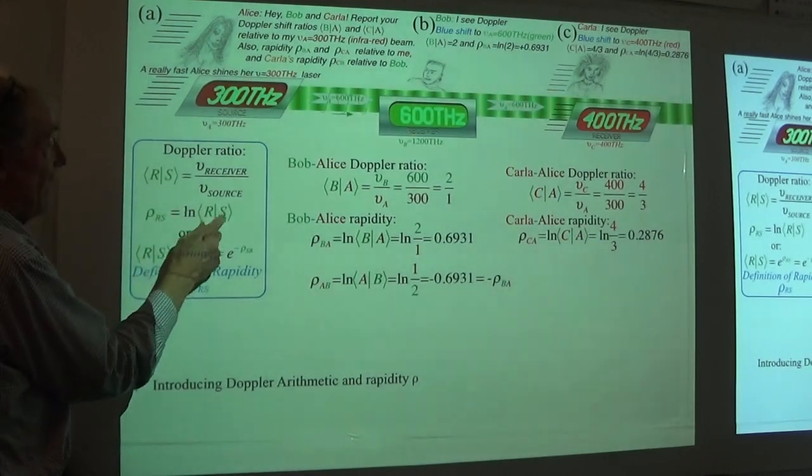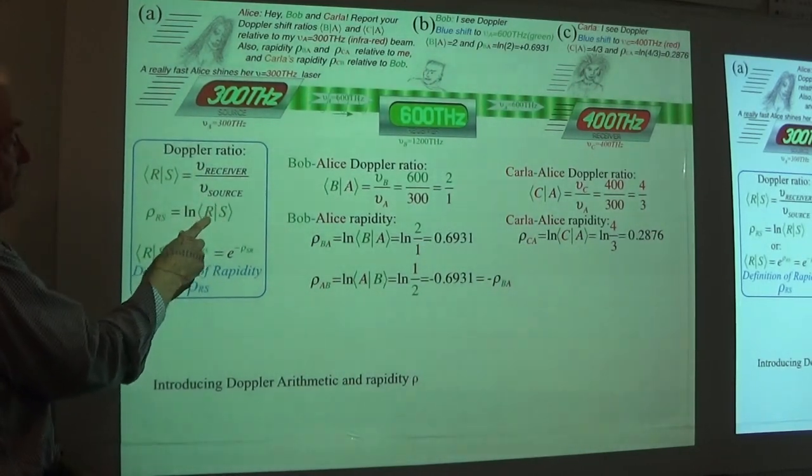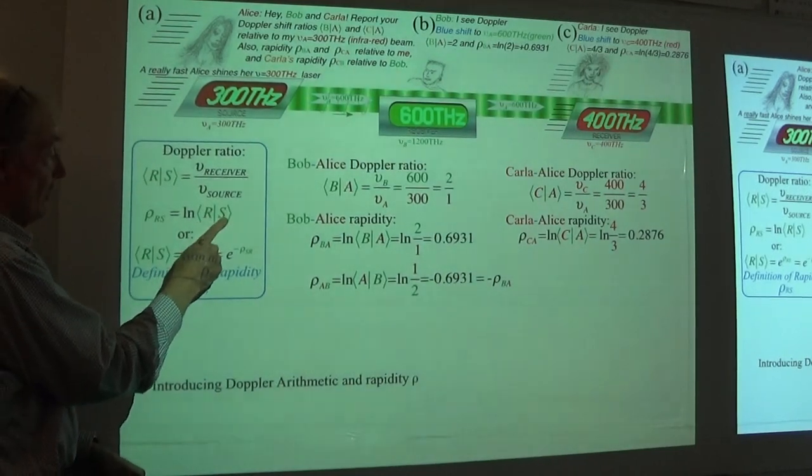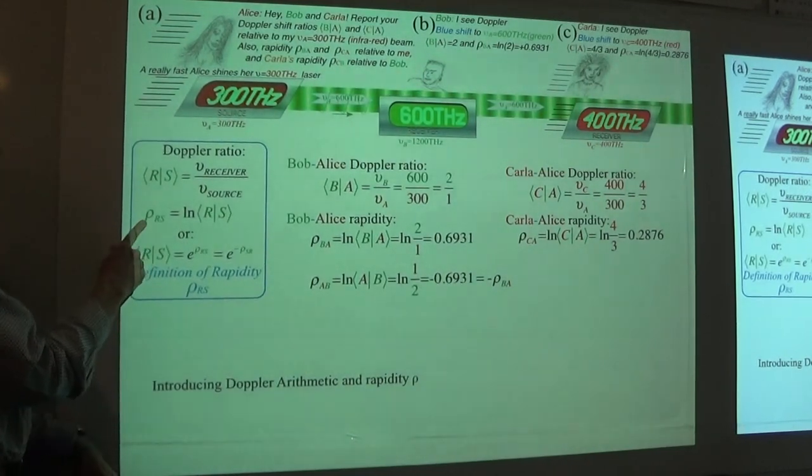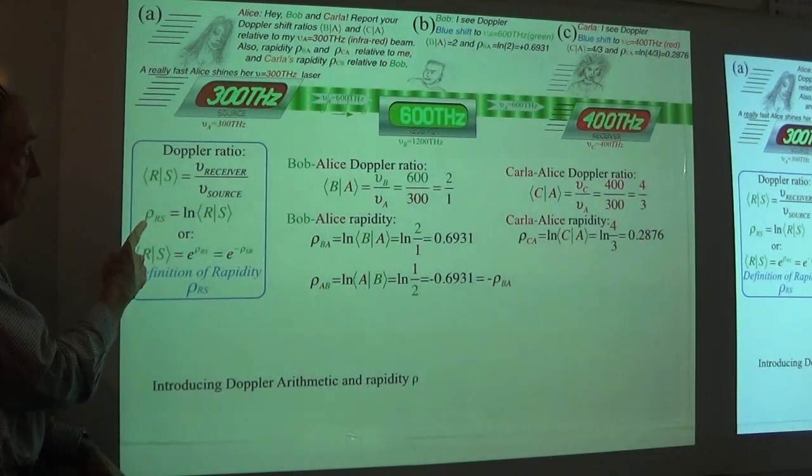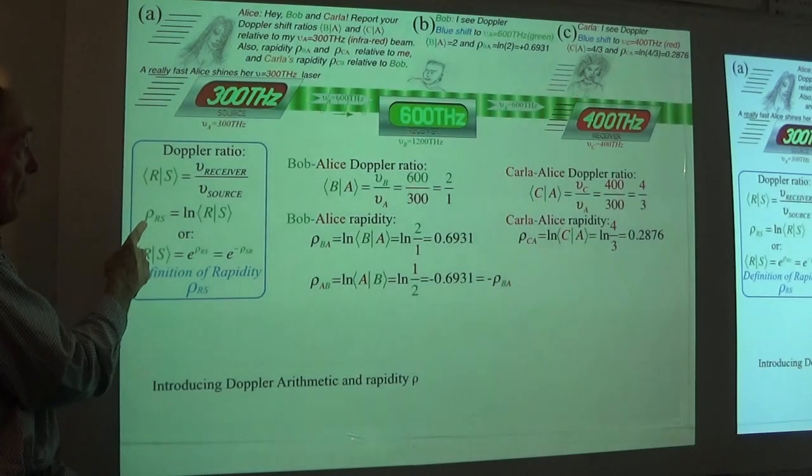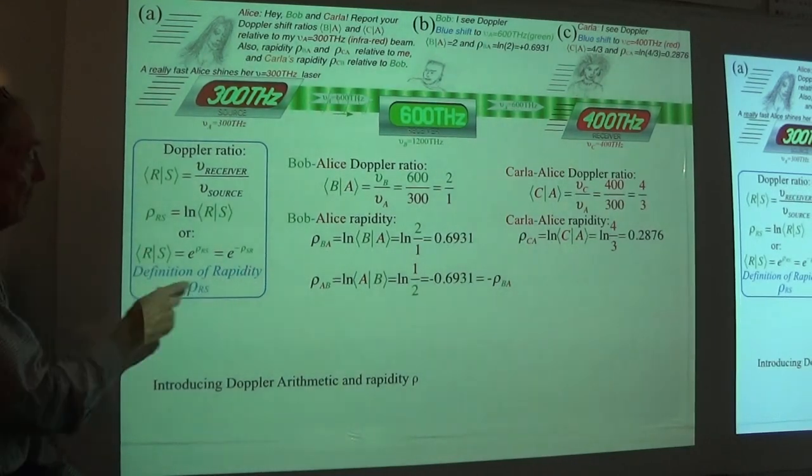The logarithm of that ratio, receiver to source, is the rho that we were talking about earlier that makes the hyperbolic functions we'll work with in a fairly standard way. And it has a name. It's called rapidity. You don't see it very often.